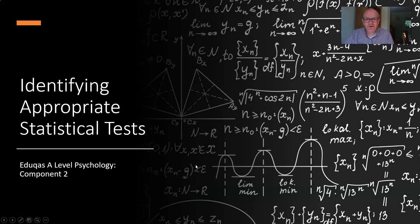Hi, I'm Ed Nolan and I'm a psychology teacher at Queen Elizabeth Sixth Form College. Our film today is going to be looking at selecting an appropriate inferential statistical test for psychological research. This film is made for students studying the EDUQAS specification for A-level psychology but can be used for other specifications also.